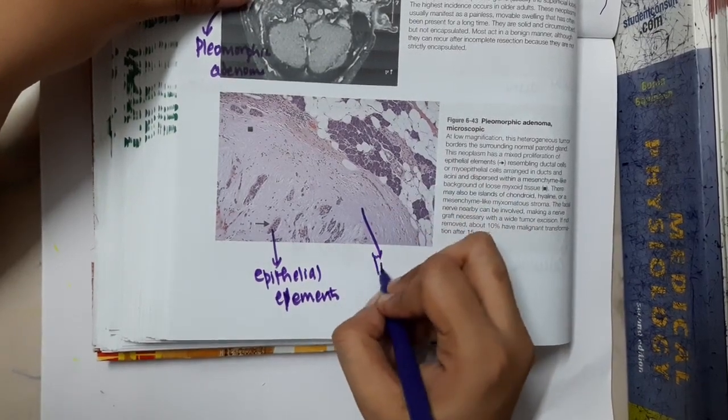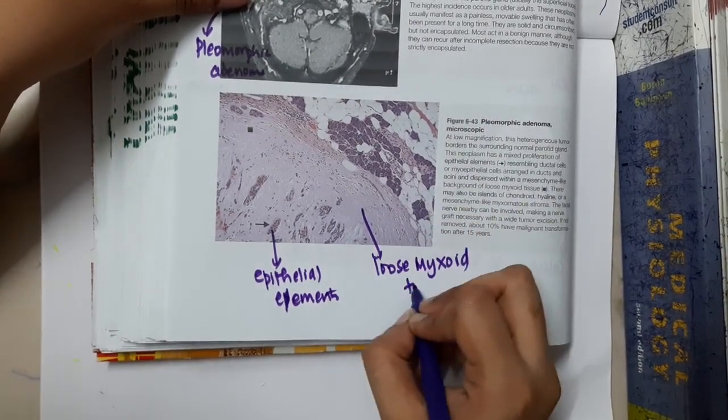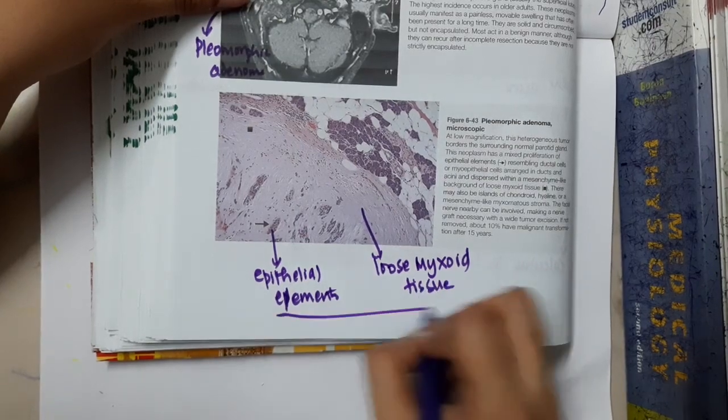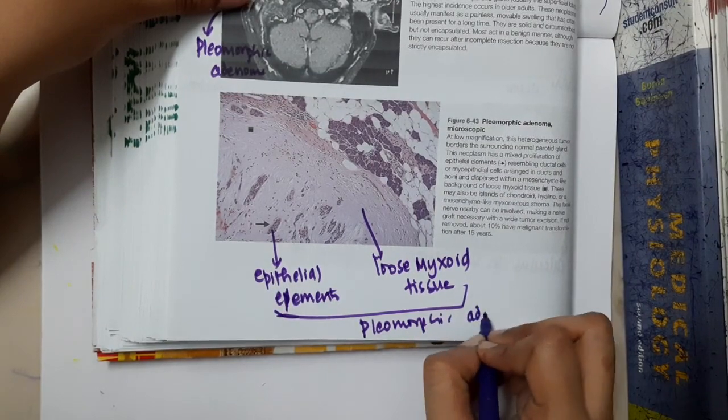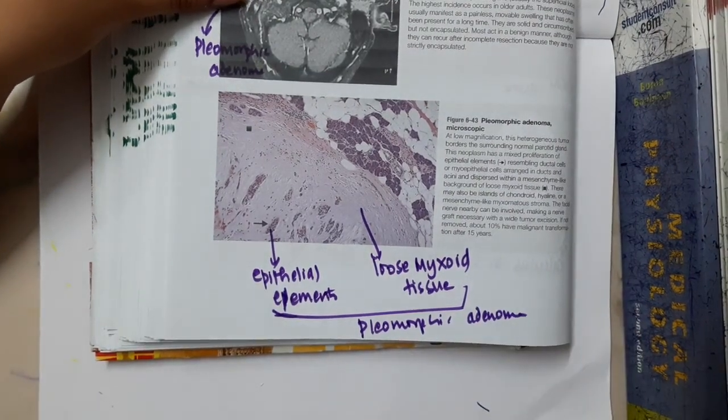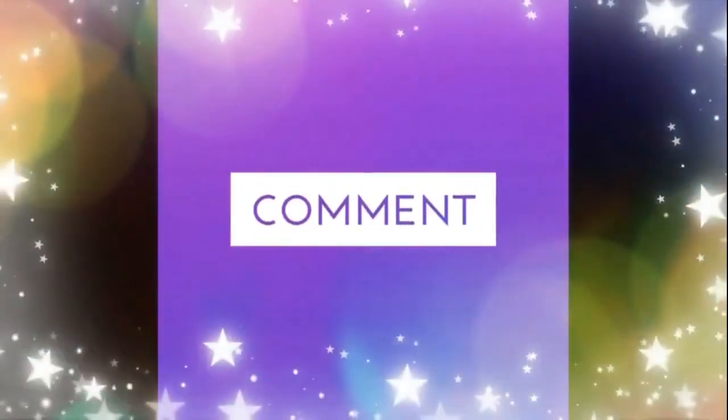You will also see loose myxoid tissue. Epithelial elements and loose myxoid tissue are seen in the same tumor, which is pleomorphic adenoma. So this is the picture showing pleomorphic adenoma. Thank you for watching.